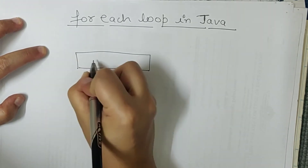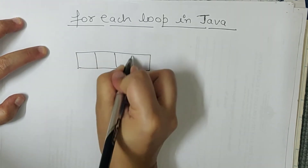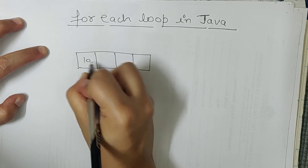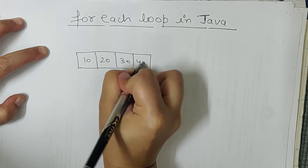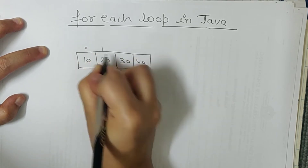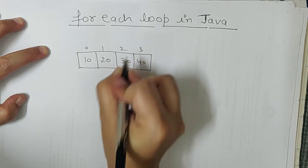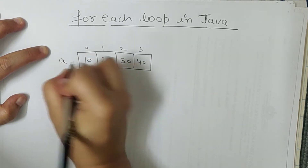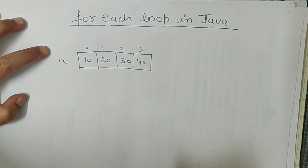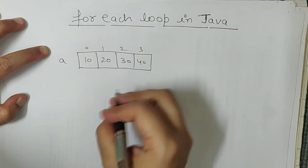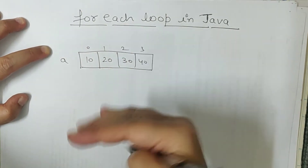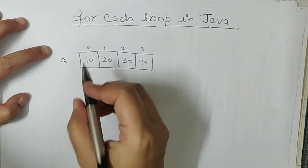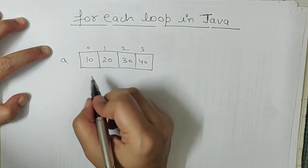Maan lo ki mera ye ek array hai. Is mein values hain 10, 20, 30, 40 aur 0, 1, 2, 3 ye iske indexes hain. Array ka naam hai 'a'. Basically agar mujhe is array ko print karwana hai to agar mein for loop use karun...